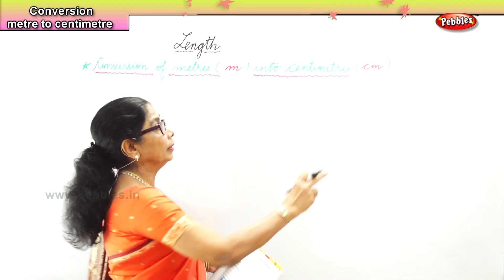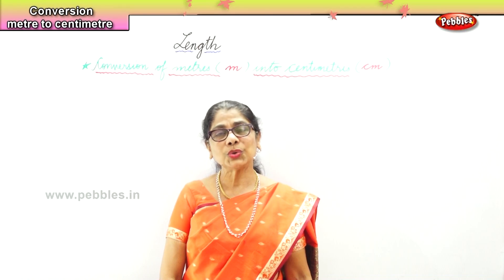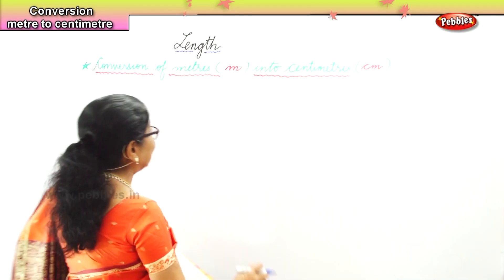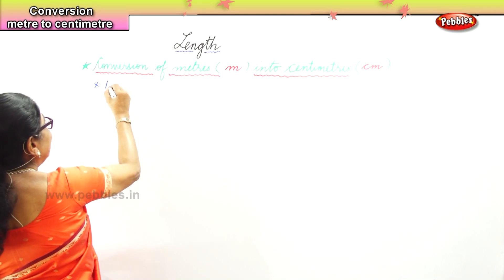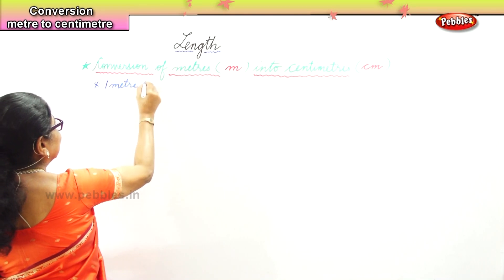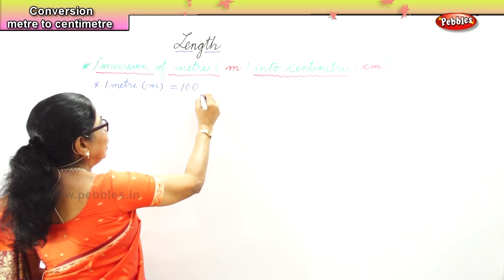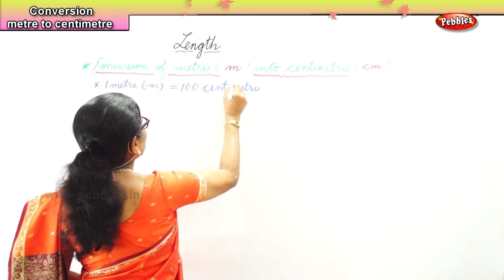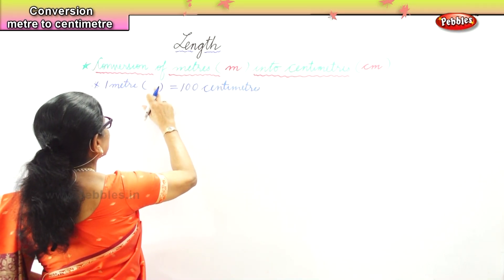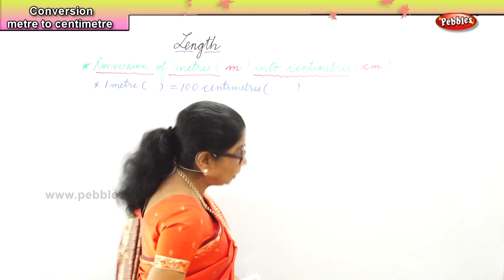Now, what is one meter? One meter is equal to 100 centimeters. We must remember this: 1 meter, that is M, is equal to 100 centimeters. You'll remember that, and that will help us in our conversion.